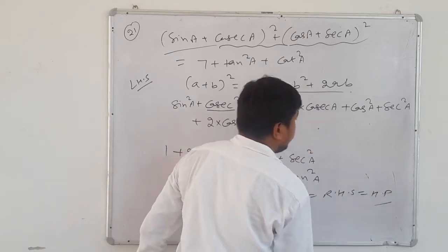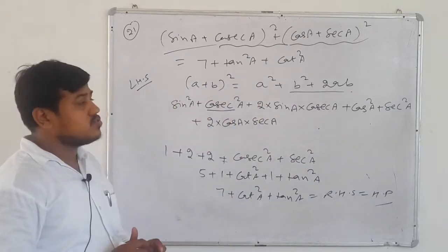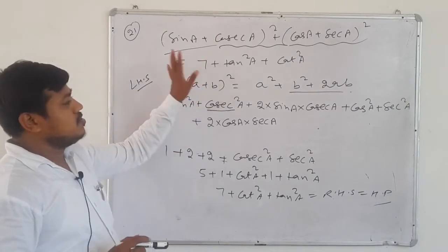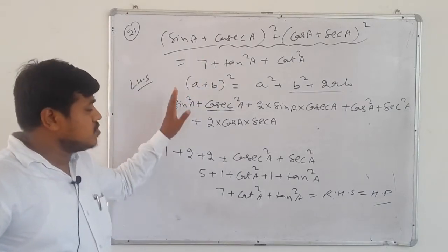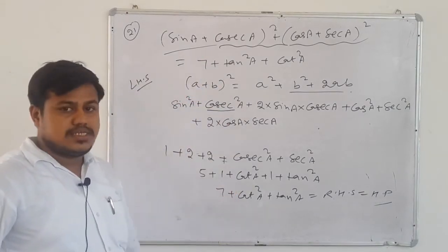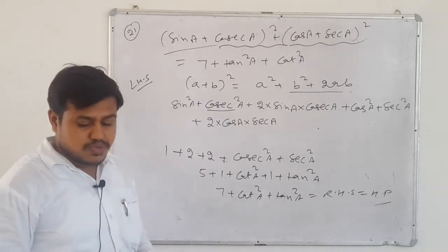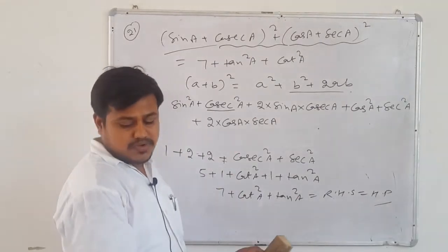Hence proved! So how did we solve this question? By opening the whole square, and then applying identities. Easy question. Question number 22.